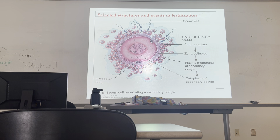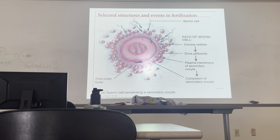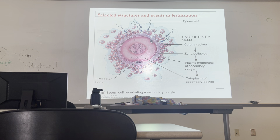One sperm breaks the plasma membrane of the secondary oocyte and lands inside. Are you familiar with mitochondrial DNA testing, which traces to the mom? That's because the dad only contributes chromosomes. Remember the sperm: there's the head, the neck where mitochondria are, and the flagella. The only contribution of the dad is the chromosomes — no organelles. So when we test mitochondrial DNA, we're actually testing for the mom.